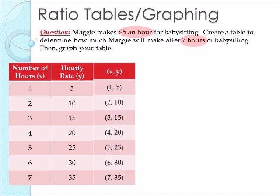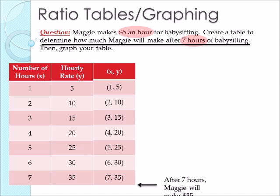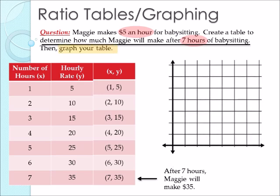To graph these points, we need to find the coordinates using the number of hours as x values and the hourly rate as y values. Our first coordinate point would be (1, 5). Going down to 7 hours, she will make $35. To graph this table, remember the three things we need when graphing. Our arrowheads are there, but we also need to put our titles in and our scale. On the bottom it shows our number of hours, which are our x values; on the side it shows our hourly rate, which are our y values. The scale for hours goes up by 1, and for hourly rate we go up by 5.